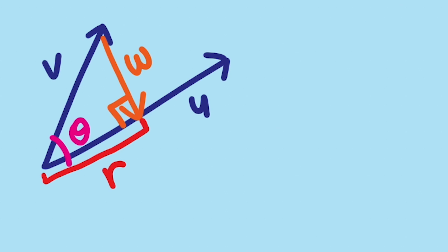The only problem is vector u may be longer or shorter than our adjacent side. So first we need to find what scalar k will scale vector u up or down to this new length we'll call r. And let's call our perpendicular vector w.